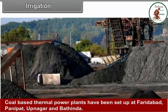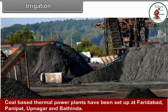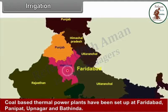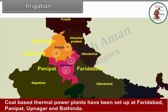Coal-based thermal power plants have been set up at Faridabad, Panipat, Rupnagar and Bathinda.